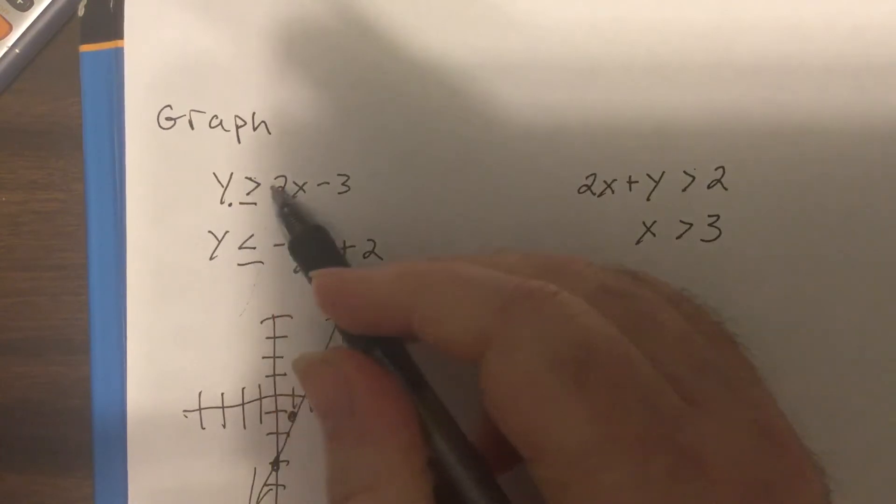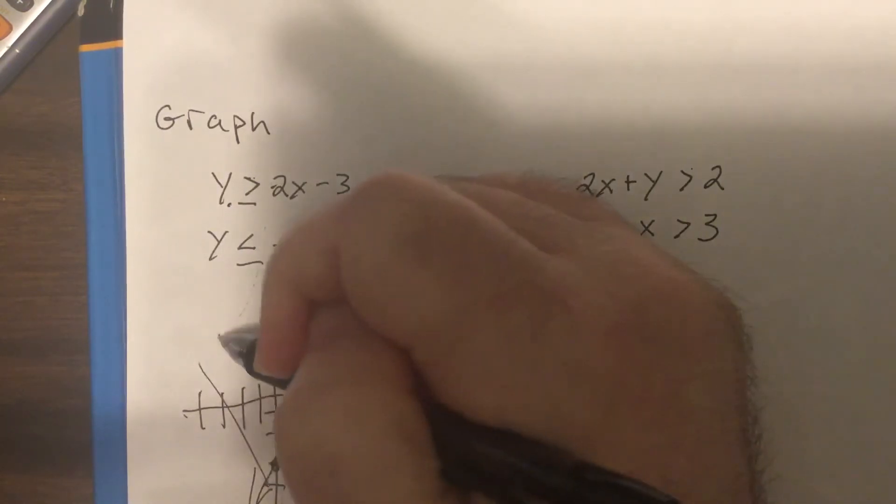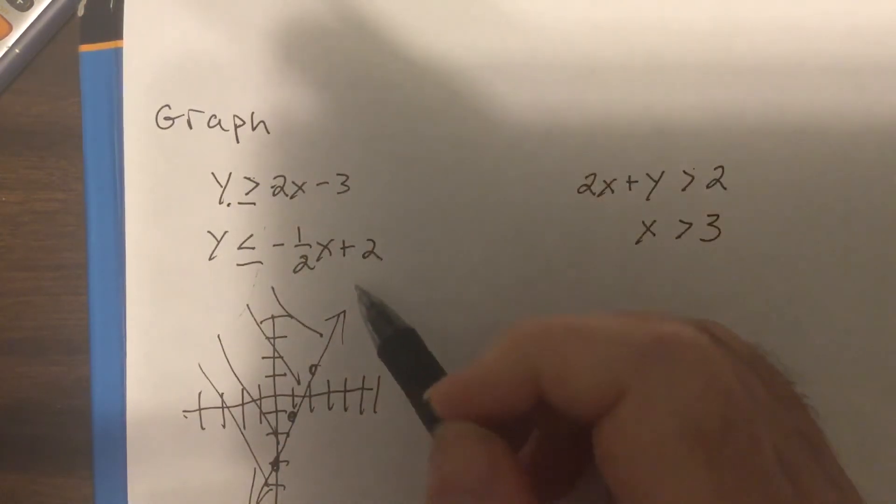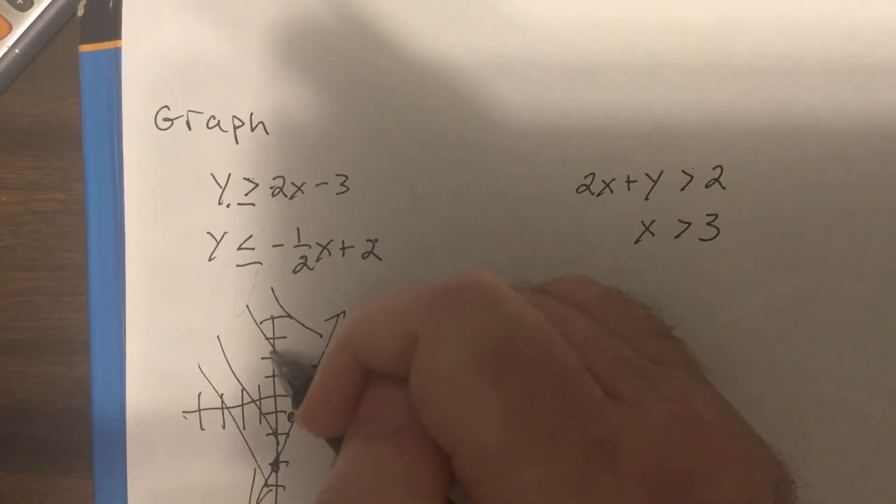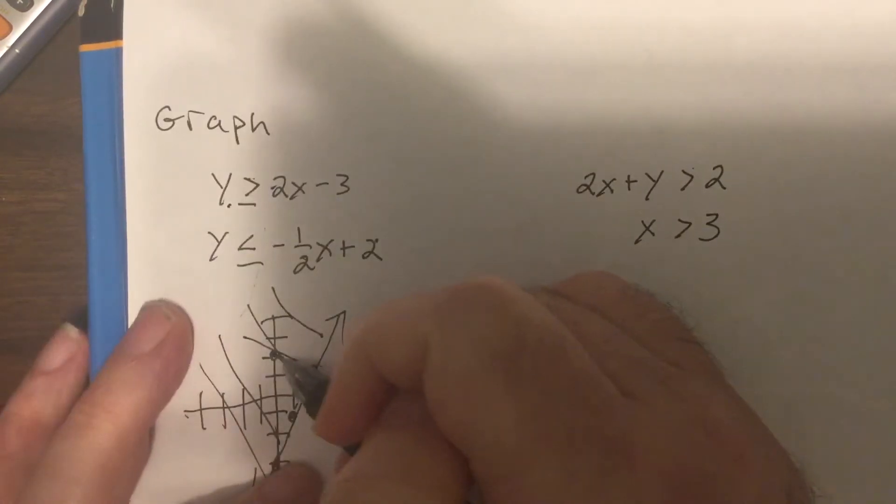So is 0 greater than negative 3? Yep. So I'm going to shade this side. For this one, it's 2, down 1 over 2, down 1 over 2, solid.